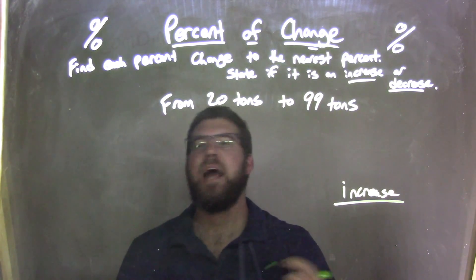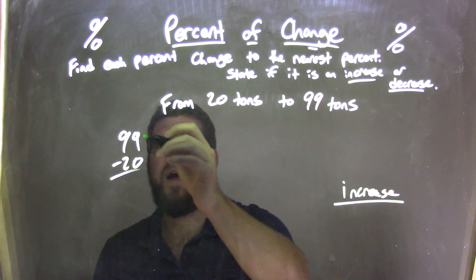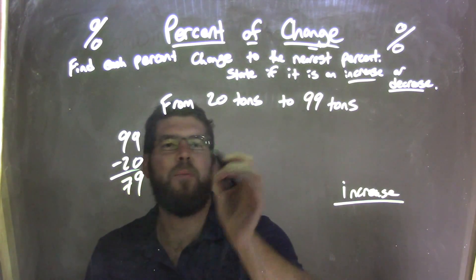Fantastic. Now, we need to find the difference. 99 minus 20. Let's subtract that. 9 minus 0 is easy. It's a 9. 9 minus 2 is 7, and we have 79.